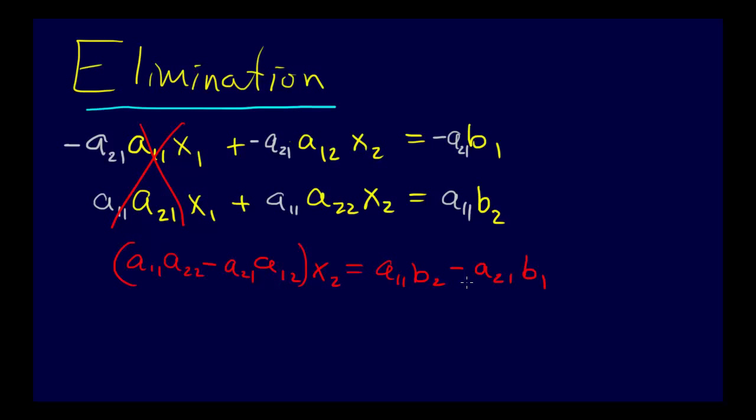We're not quite there, so we can divide both sides by this. So we'll say x2 equals a11 b2 minus a21 b1, all over a11 a22 minus a21 a12.